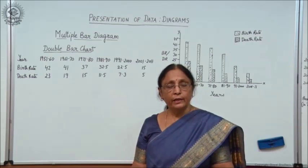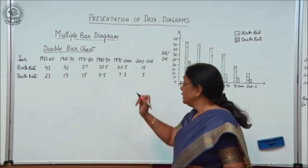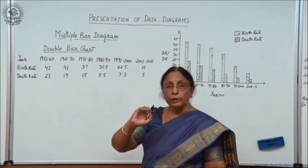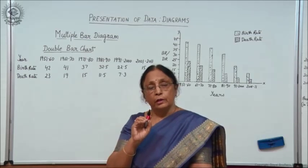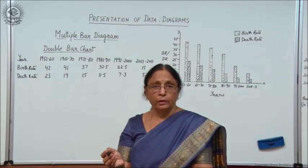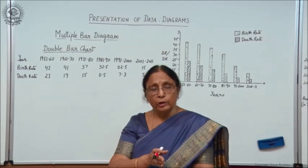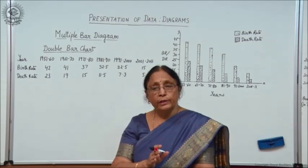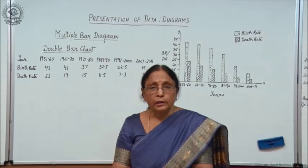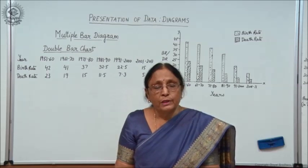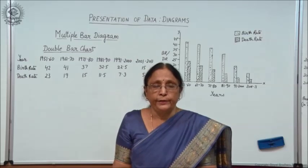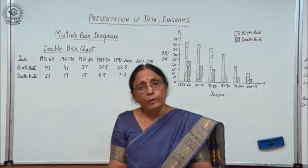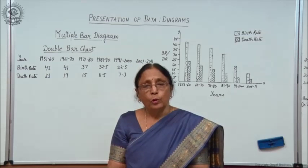In the simple bar diagram, we had only a single bar. Now here we have multiple bars. Under multiple, we have double bar diagram and triple bar diagram. That means two adjacent bars are drawn or three bars are drawn in a set, but it will not be more than three.